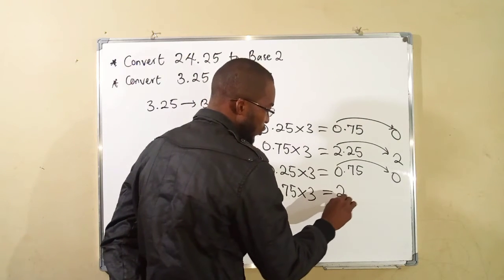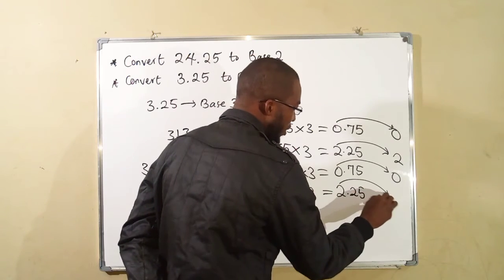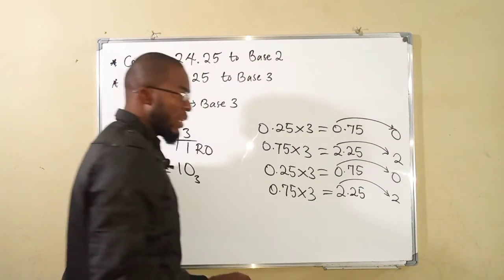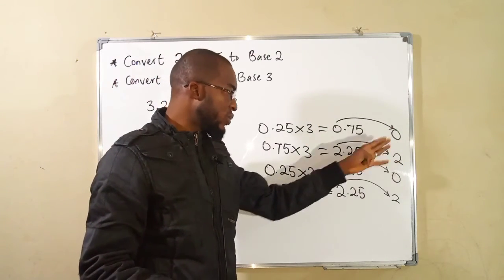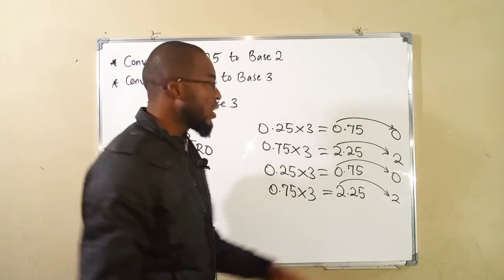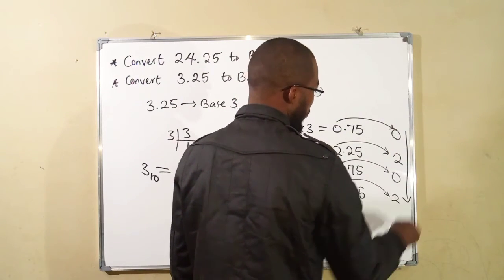You shall obtain 2.25. Take away the whole number, which is 2. You can see it's just a repetition. It is recurring 0, 2, 0, 2, 0, 2 in that order. Take these numbers from the top to the bottom.